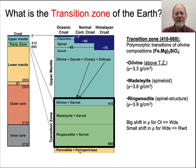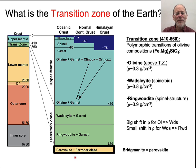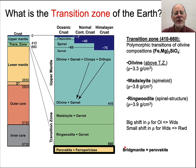Even deeper in the mantle there is Bridgmanite, which has a denser structure than orthopyroxene. It's also called Perovskite.